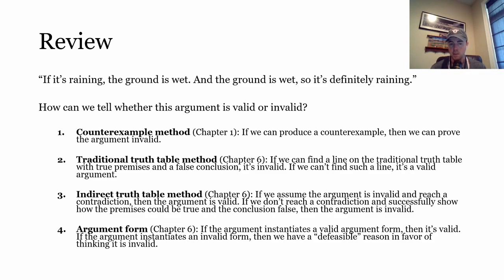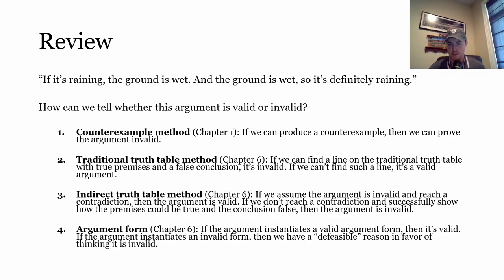Finally, we can look at the argument's abstract logical form. If the argument instantiates a valid argument form, we know it's valid. If it instantiates a characteristically invalid argument form, we have a defeasible reason — meaning we could be mistaken — to think it's invalid. There could be countervailing evidence, such as the conclusion being a tautology, that would make it valid. So those are four different ways to determine validity or invalidity.